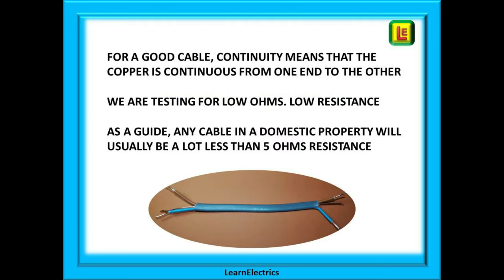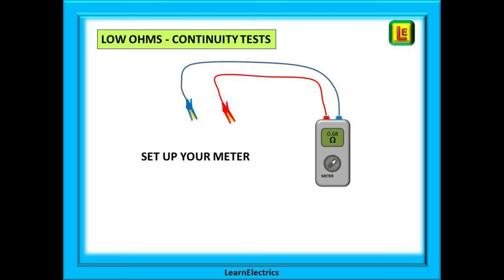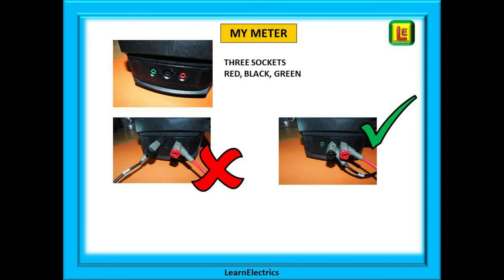For a good cable, continuity means that the copper is continuous from one end to the other. We are testing for low ohms, low resistance, and as a guide any cable in a domestic property will usually be a lot less than 5 ohms in resistance. The first step, always before doing any testing, is to set up your test meter and to make sure that it is functioning correctly. Different manufacturers make their meters with slight differences, but if you learn how to set up your own meter correctly then it is very easy to adjust to someone else's meter.